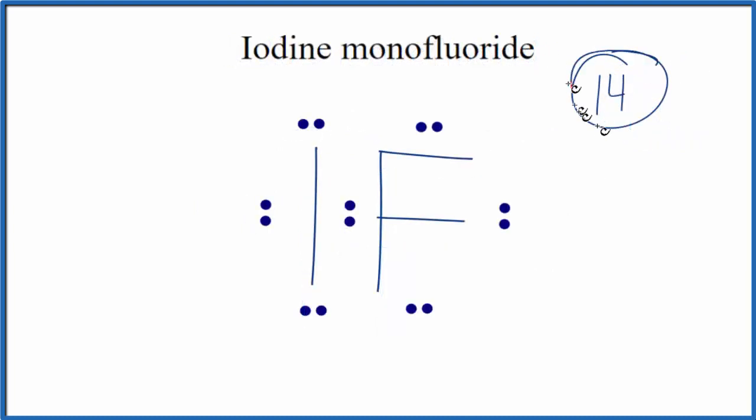So we've used all 14 valence electrons, and if we look at this, iodine here has 8, so it has an octet. And the fluorine also has an octet as well. So they're sharing these two electrons here, so they both can have an octet with 14 valence electrons.